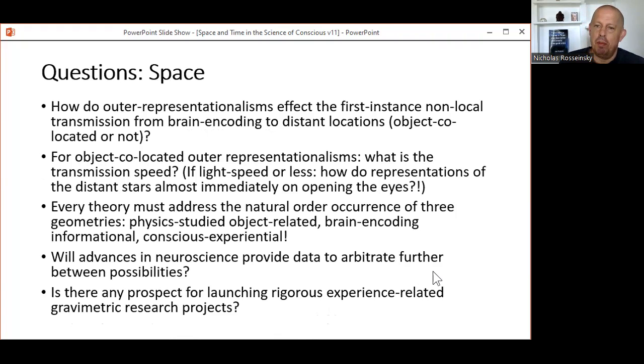So, from the far-flung and apparently esoteric to the first of three slides collecting together some relatively concrete questions—questions concerning space here in the science of consciousness on this first slide. How do outer representationisms affect, in the first instance, non-local transmission from brain encoding to distant locations, co-located with objects or not? Without any mechanism, non-locality appears to persist beyond the first instance, and with a physical mechanism, other questions arise. For example, what is that mechanism made of, and how does it develop biologically? Then for object co-located outer representationisms, what's the transmission speed?